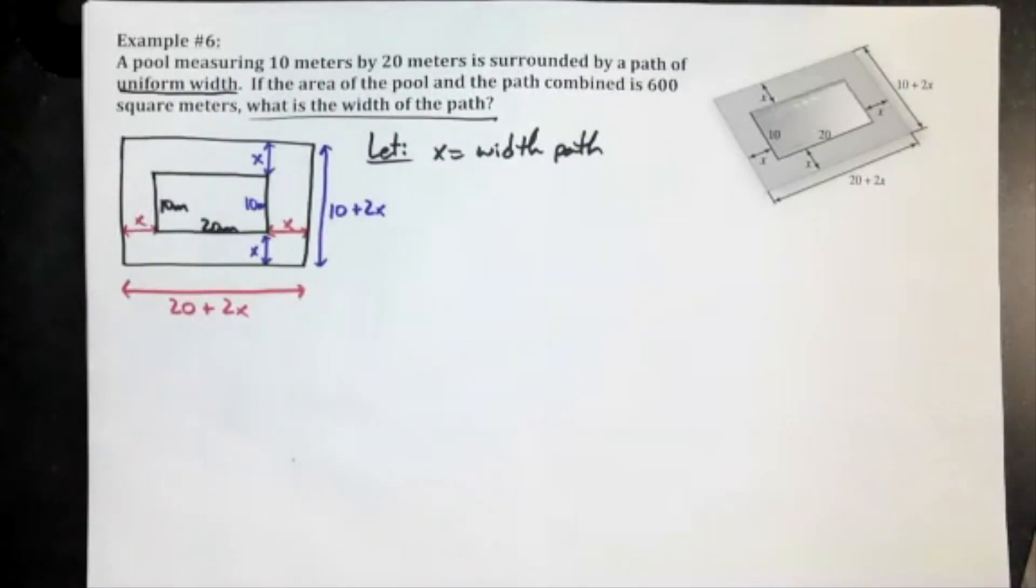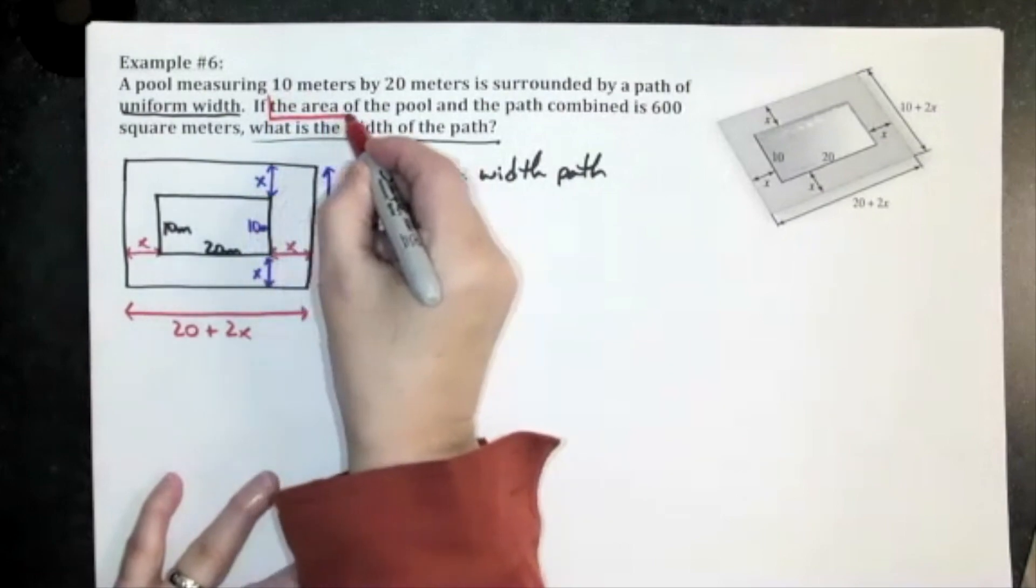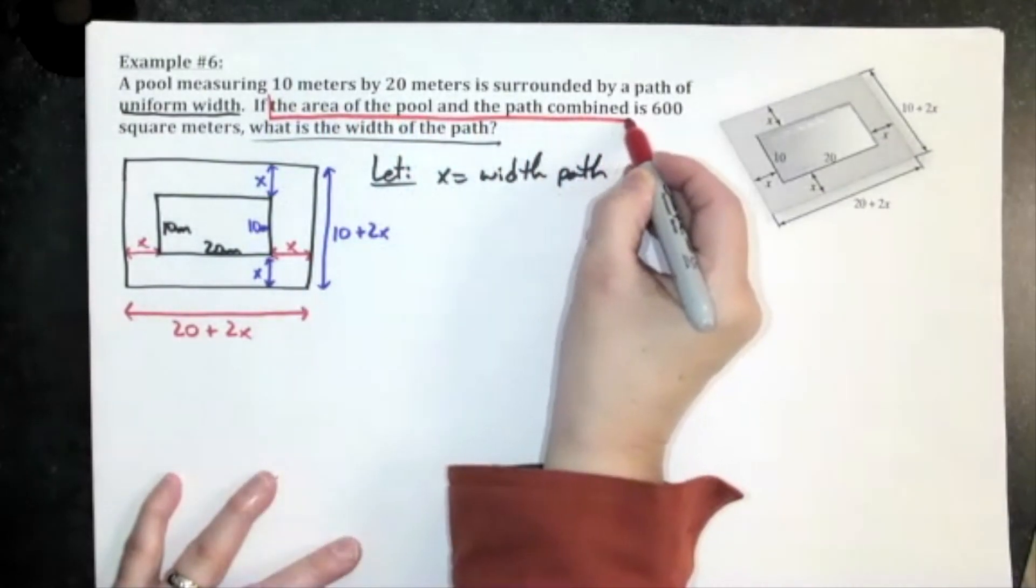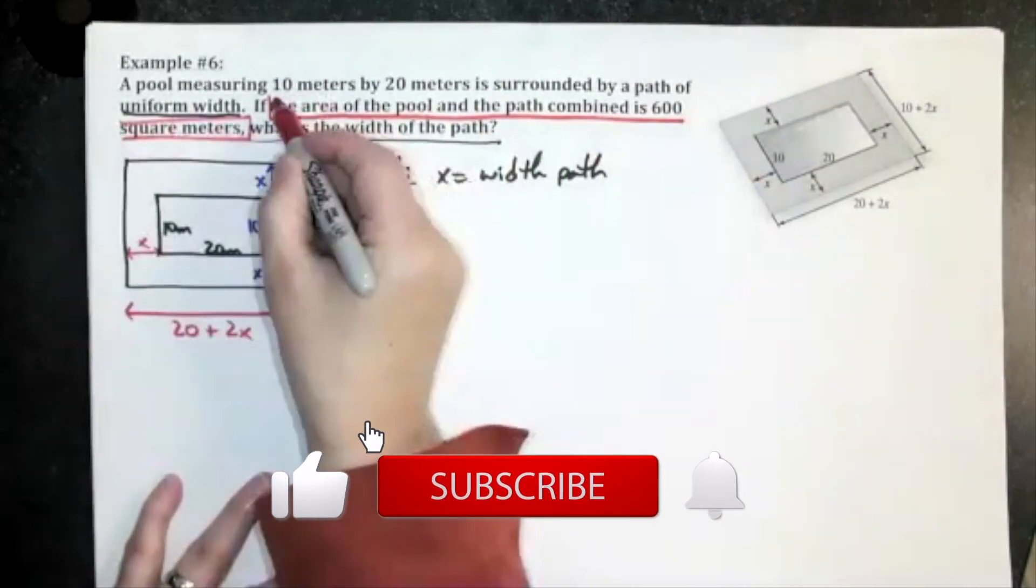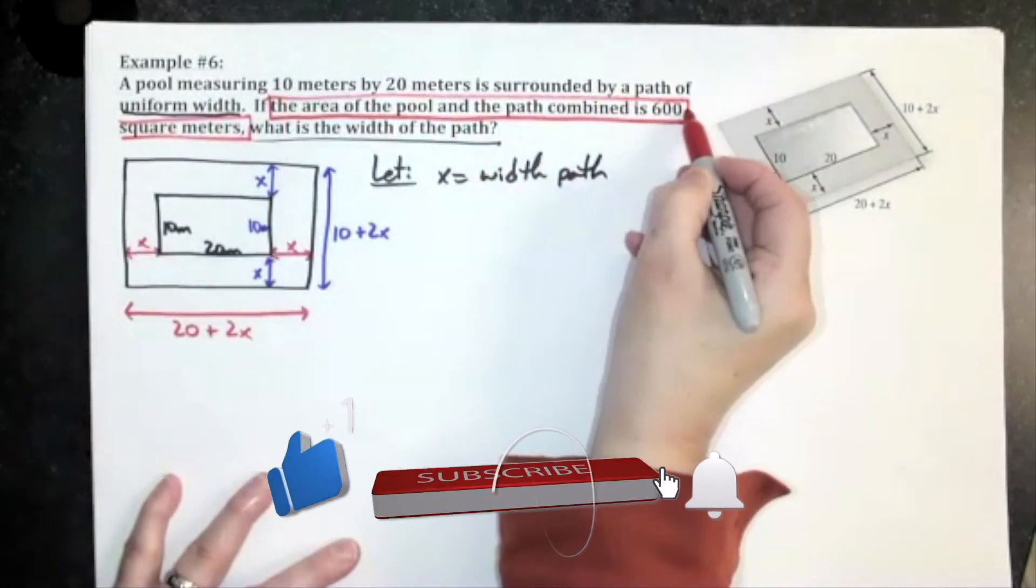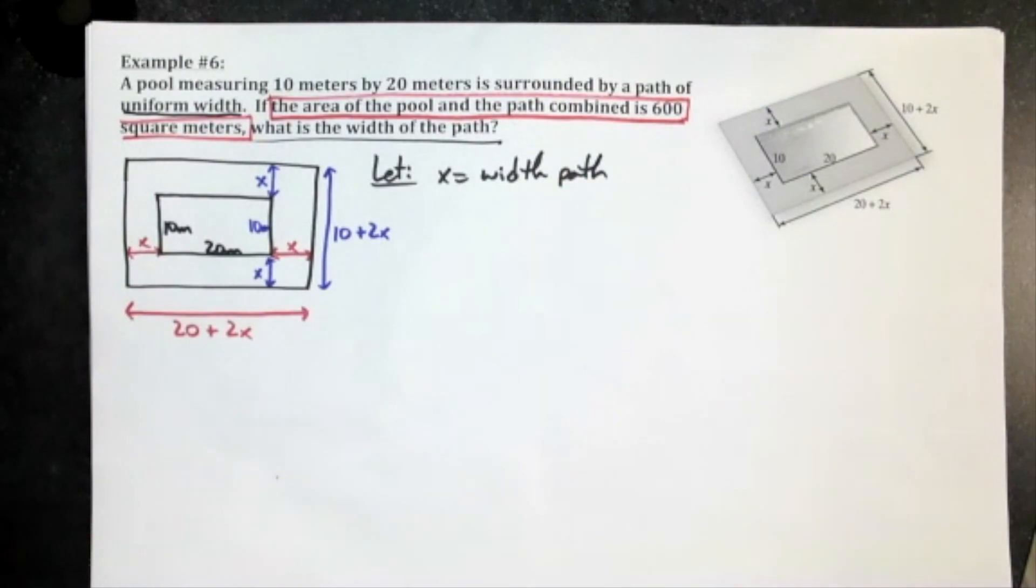Now let's keep going here. It says if the area of the pool and the path combined is 600 meters, that's where we're going to come up with our equation. If the area of the pool and the path combined is 600 square meters, so let's write down area.